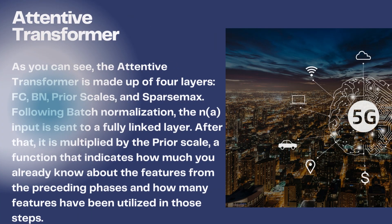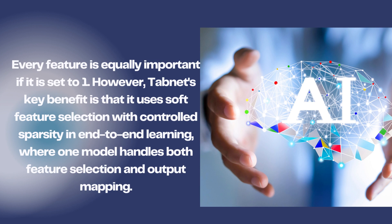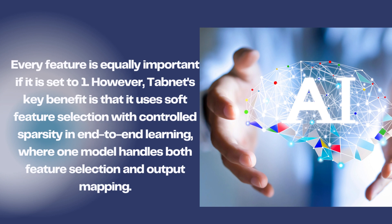Attentive transformer: the attentive transformer is made up of four layers — FC, BN, prior scales, and sparsemax. Following batch normalization, the N, A input is sent to a fully linked layer. After that, it is multiplied by the prior scale, a function that indicates how much you already know about the features from the preceding phases and how many features have been utilized in those steps. Every feature is equally important if it is set to one. However, TabNet's key benefit is that it uses soft feature selection with controlled sparsity in end-to-end learning, where one model handles both feature selection and output mapping.